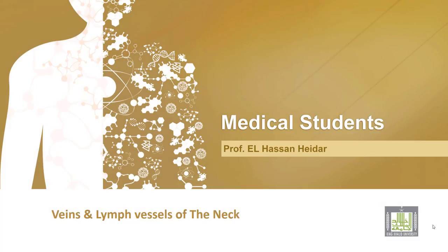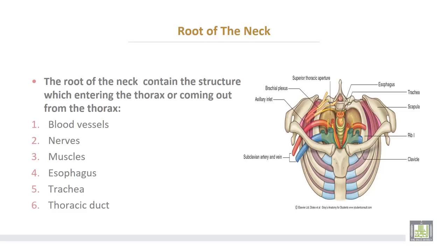Venous drainage and lymphatic drainage of the neck. The root of the neck contains the following structures which are entering the thorax or coming out from the thorax. These structures are blood vessels, nerves, muscles, esophagus, trachea, and thoracic duct.